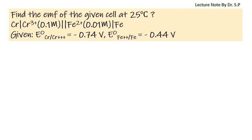We have a question: find the emf of the given cell at 25 degrees Celsius. Here given potential of chromium is -0.74 volts and potential of iron is -0.44 volts.